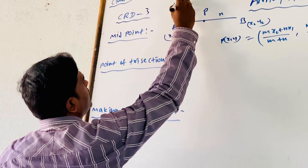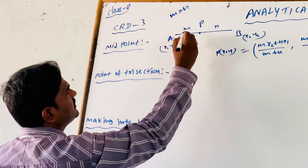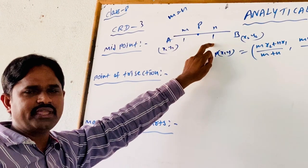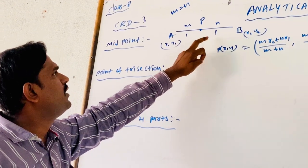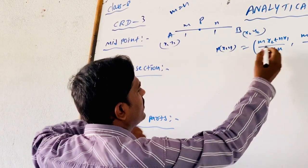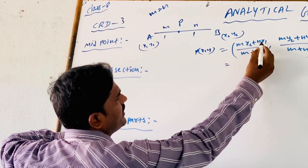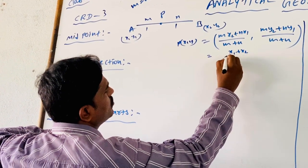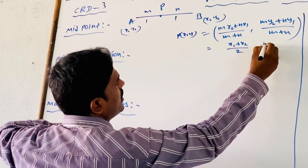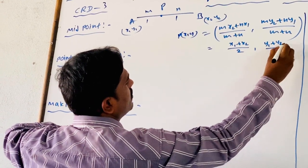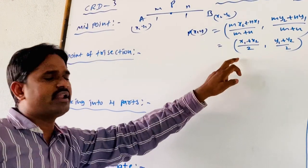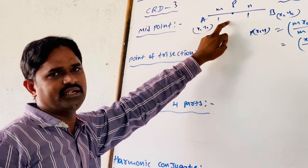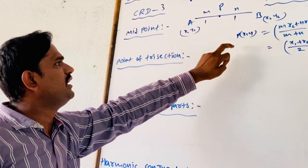In this case, where M is equal to N, we get the ratio 1 is to 1 — for example, 4 to 4 simplifies to 1 to 1. By substituting M = 1 and N = 1 in this equation, we get (X1 + X2)/2, (Y1 + Y2)/2, which is known as the midpoint of AB line segment using the section formula.